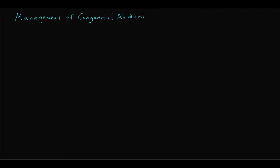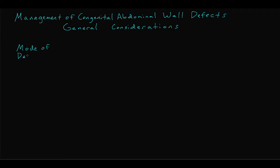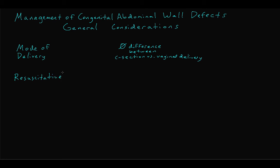Now let's discuss how to manage congenital abdominal wall defects. First, some general considerations. The obstetric literature has not shown any clear difference in outcomes for infants with these conditions with cesarean section versus vaginal delivery; the mode of delivery should be decided primarily on the obstetric indications. The exposed intestines and viscera subject the infant to increased fluid and heat losses, so appropriate supportive measures such as judicious resuscitation and warming maneuvers should be taken. In the case of gastroschisis, where the intestines are completely exposed without an amniotic membrane, the infant may require placement of a plastic bowel bag known as a silo. Loss of normal abdominal wall function may also cause respiratory distress, and endotracheal intubation may be required.